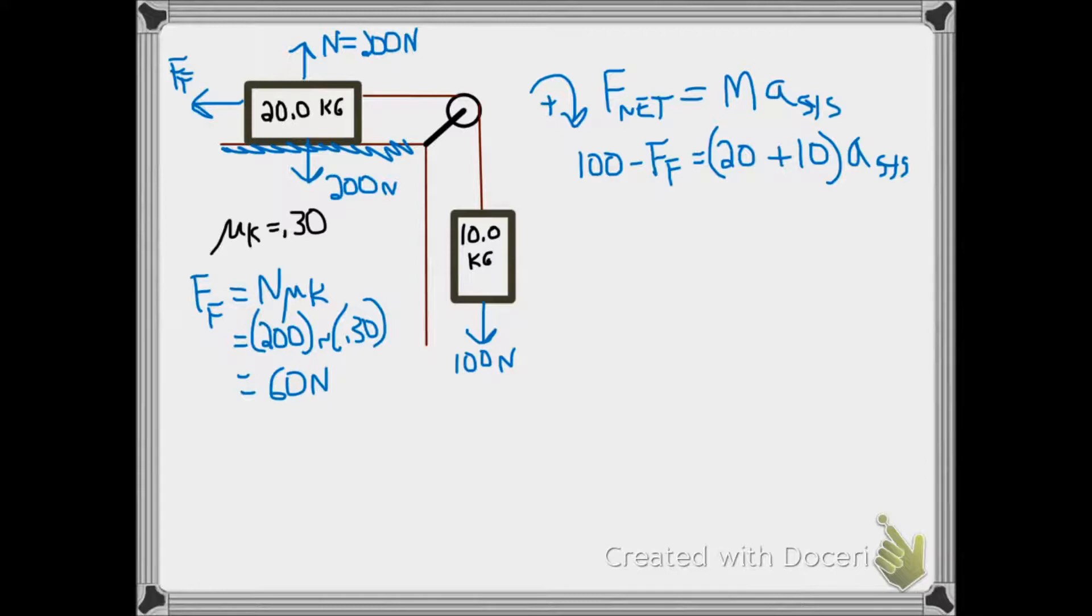Subtracting the 60 from the 100 gives us our net force of 40, that equals the system mass of 30 kilograms times our acceleration.